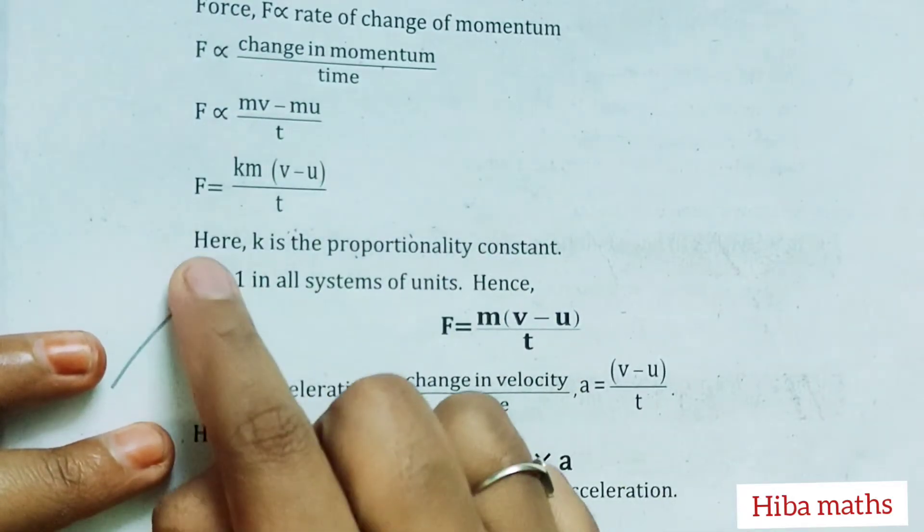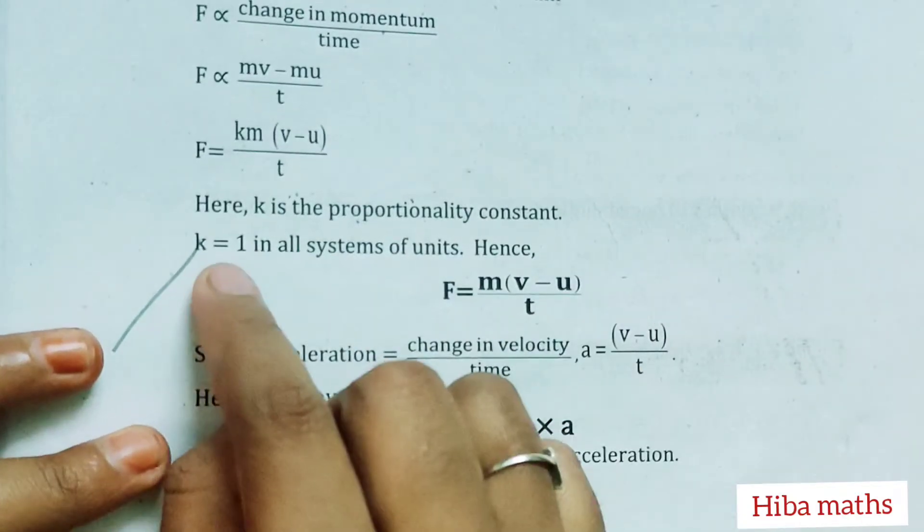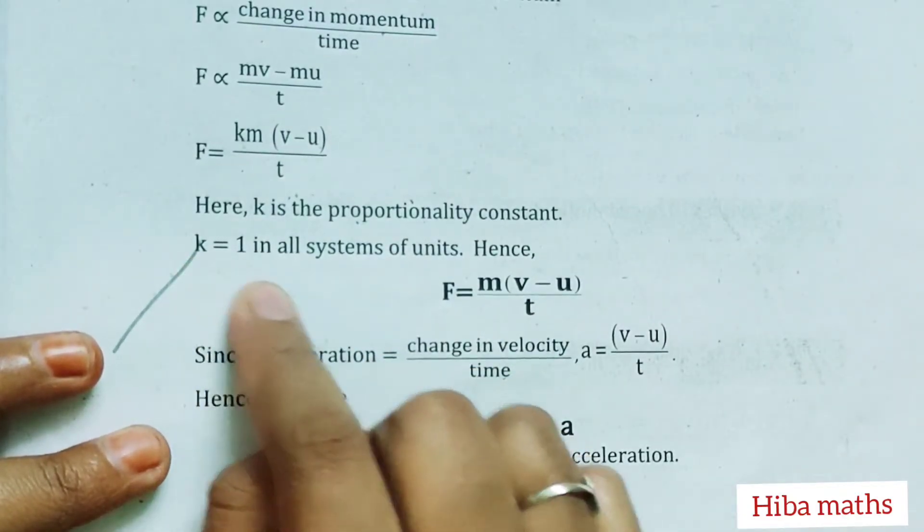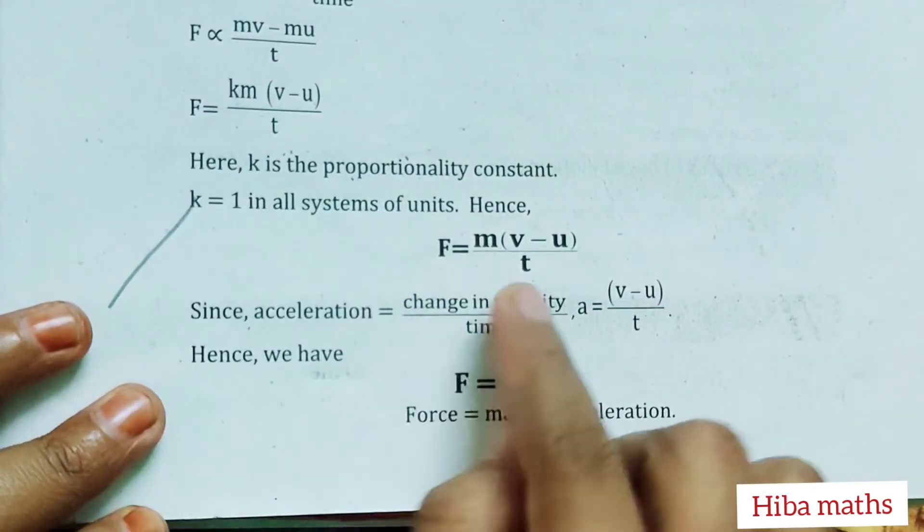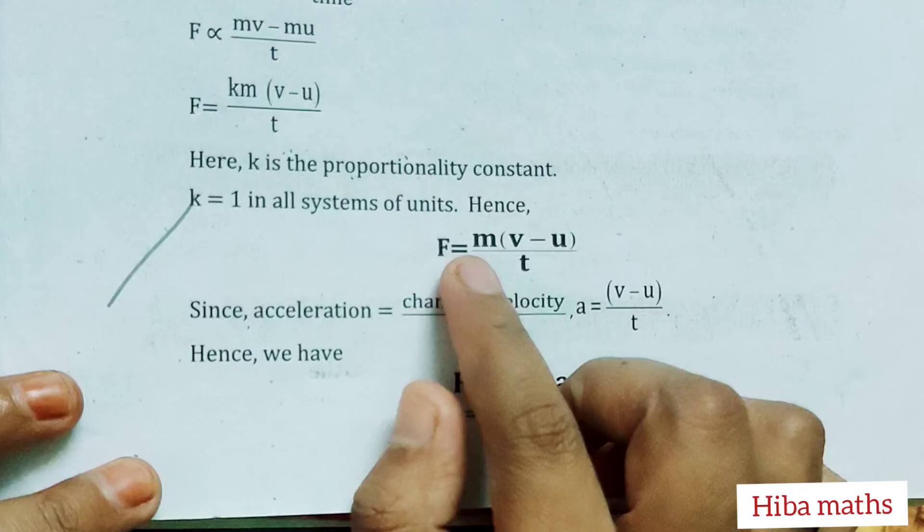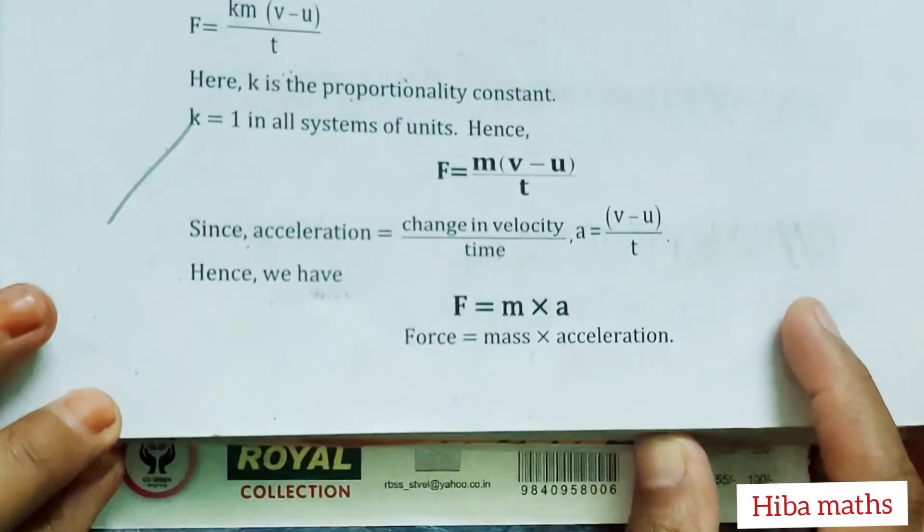Here, k is the proportionality constant. k = 1 in all systems of units. Hence, F = m(v - u)/t.